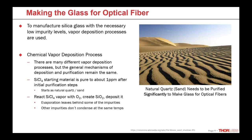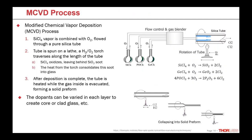The first common deposition method is called MCVD — Modified Chemical Vapor Deposition — one of the classic methods to make fiber preforms. In this method we have a silica tube on a lathe, spinning, with a hydrogen-oxygen torch outside the tube applying heat as it traverses left and right. We have silicon tetrachloride, germanium chloride, and sometimes phosphorus oxychloride, all combined into a vapor with O2 gas and flowed into this silica tube. As the tube spins and the torch heats a certain area, an oxidation reaction occurs, producing SiO2 that's deposited on the walls of the tube as silica soot.